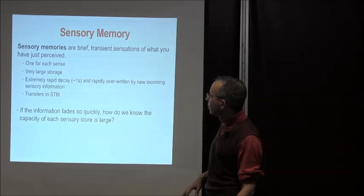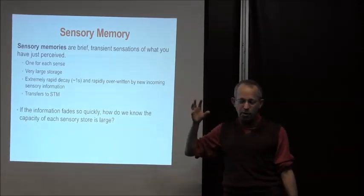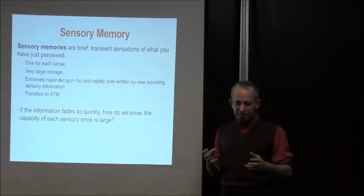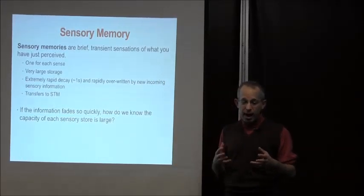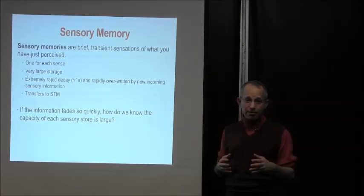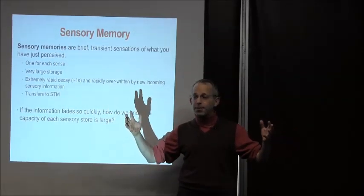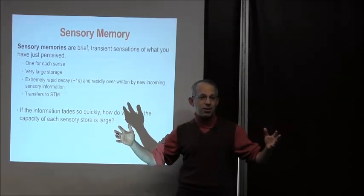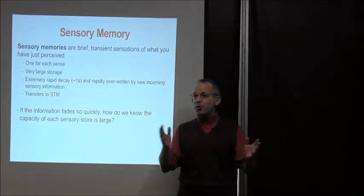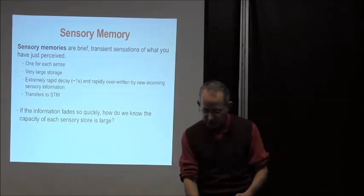Sensory memory is our brief transient sensation of what we've just perceived. If this information fades so quickly, how do we know the capacity of each sense is so large? After all, if sensory memory fades in less than a second, but it takes you a second just to enumerate some subset of it, how do we know how large it actually is?